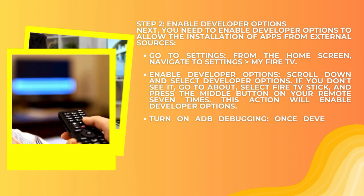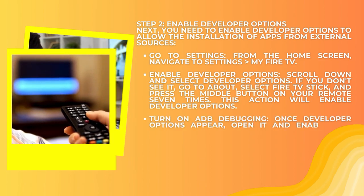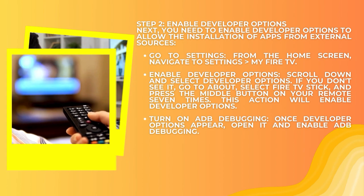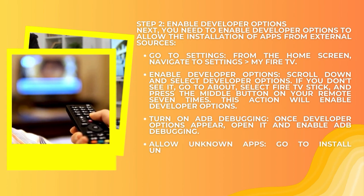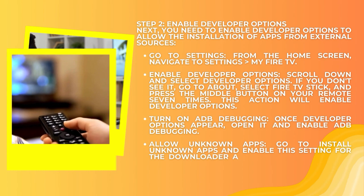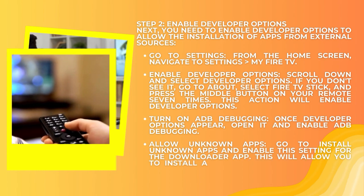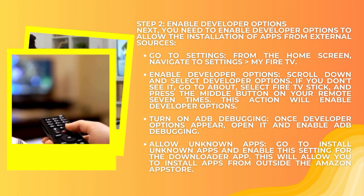This action will enable Developer Options. Turn on ADB Debugging: once Developer Options appear, open it and enable ADB Debugging. Then go to Install Unknown Apps and enable this setting for the Downloader app. This will allow you to install apps from outside the Amazon App Store.